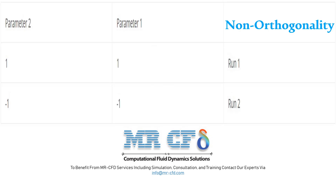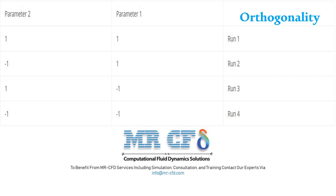This table represents non-orthogonality, because for each of the two input parameters, only their combined or interaction effects are measured. As it is obvious, the two solution processes have different values from the two input parameters. While this table represents orthogonality, because the independent effect of each input parameter — unrelated to the other input parameter — are measured.